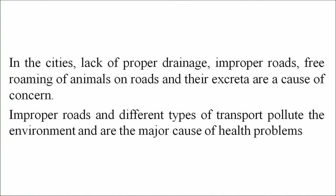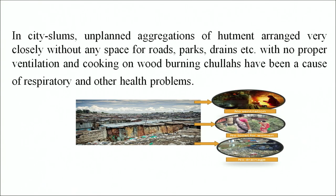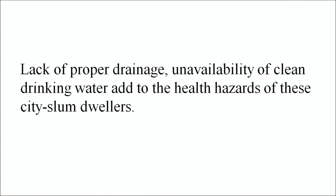Improper roads and different types of transport pollute the environment and are a major cause of health problems. About one-fifth of the urban population resides in slums and one-third of the population does not even have access to sanitation and clean drinking water, which results in poor health. These are all consequences of rapid urbanization in India. In city slums, unplanned aggregation of huts arranged very closely without any space for roads, parks or drains, with no proper ventilation and cooking on wood-burning chulas have been a cause of respiratory and other health problems. Lack of proper drainage and unavailability of clean drinking water add to the health hazards of city slum dwellers.